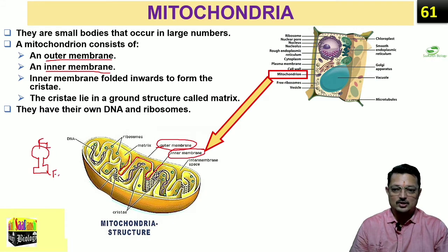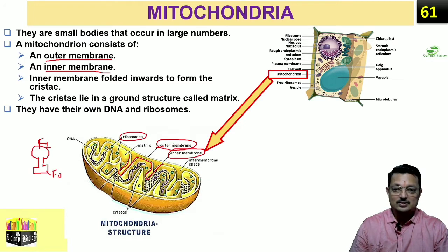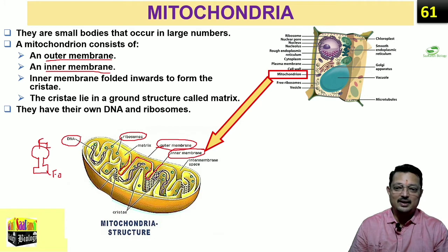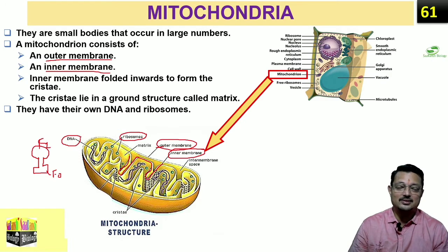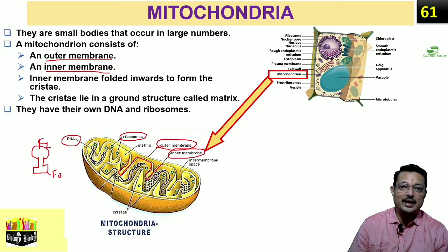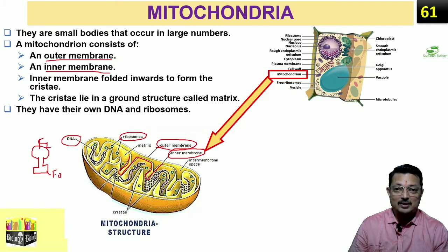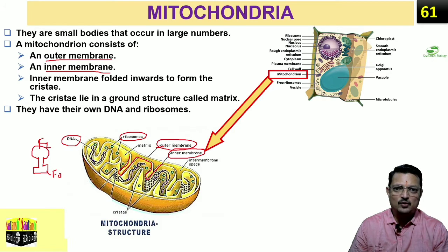In higher classes, you will study how these F0F1 particles form energy. Besides this, some ribosomes are present inside mitochondria, and there is also circular DNA. Since mitochondria has circular DNA — similar to prokaryotic cells like bacteria — we can assume it is an example of endosymbiosis: a eukaryotic cell must have engulfed a prokaryotic cell, which then evolved inside the eukaryotic cell, performing a dual function of existing inside and producing energy.